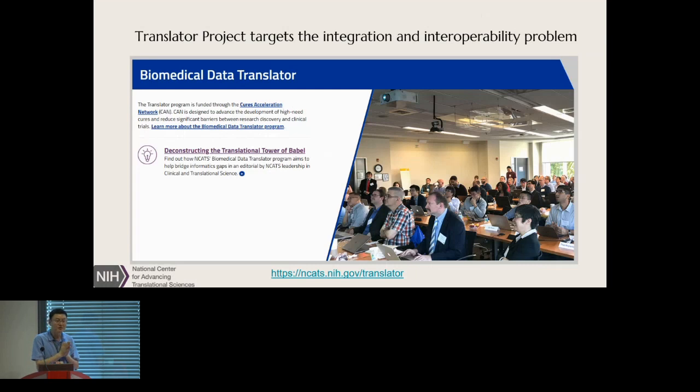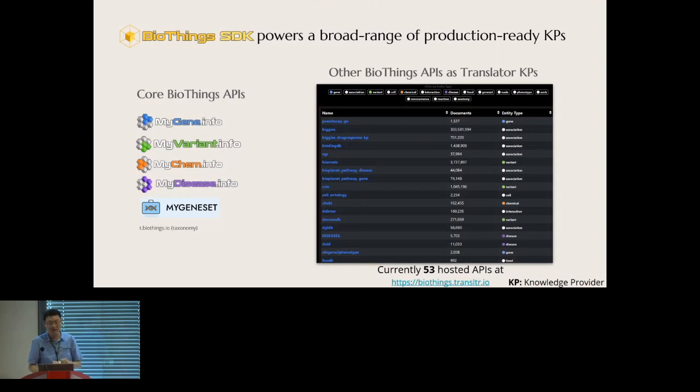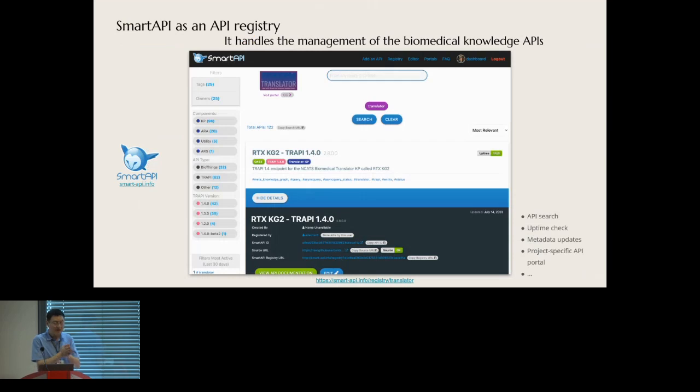That's exactly how the BioThings project works in the NCATS translator project. The NCATS translator project focuses on data integration across a long list of BioThings types. BioThings project fits right in. We're not just providing the core APIs, but we also host over 50 knowledge APIs for translator hosted on our website, which we call knowledge provider APIs. We build so many APIs not just by creating them ourselves. We use BioThings SDK to help other translator teams build their own data plugins, and then we help them deploy and host their knowledge APIs.